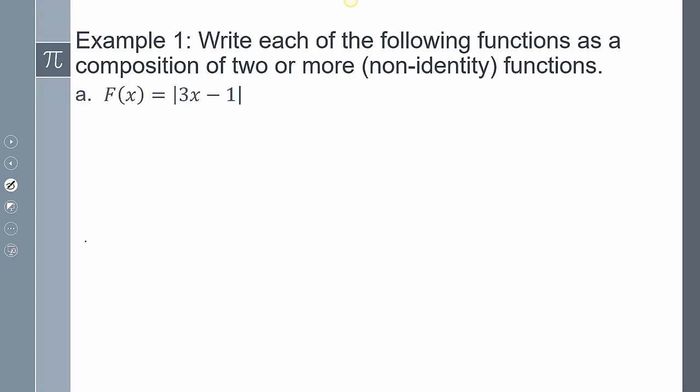Let's take a look at this first one here. It says write each of the following functions as a composition of two or more functions. It looks like this function, 3x minus 1, is inside this absolute value.